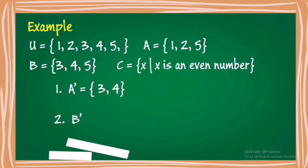Number 2: What are the elements of the complement of B? The complement of B must contain elements of U that are not elements of B. So what are those elements of U that are not elements of B? It's 1 and 2.